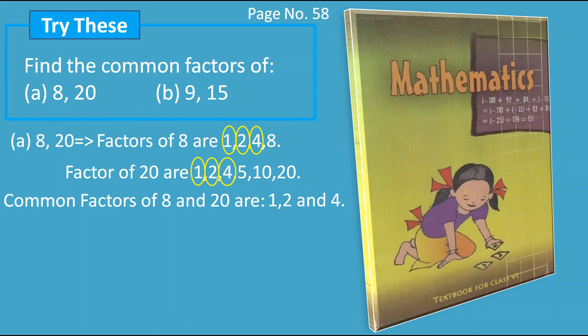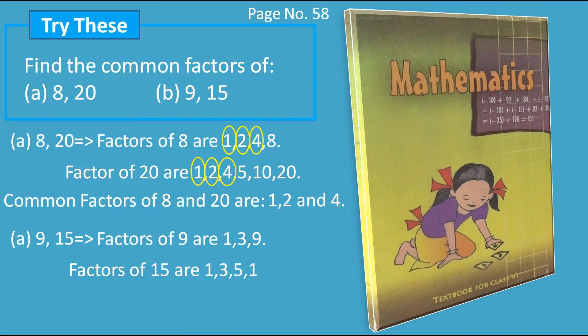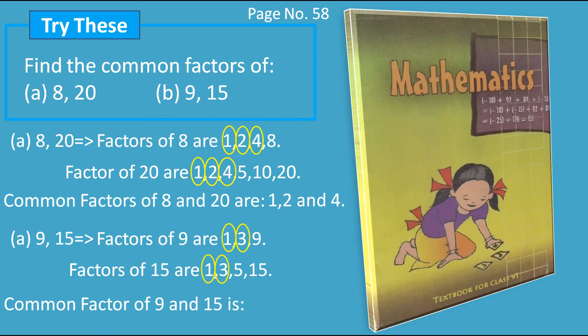Now let's find the common factors of 9 and 15. The factors of 9 are 1, 3, 9 and the factors of 15 are 1, 3, 5, 15. Here we are getting 1 and 3 as common factors. So the common factors of 9 and 15 are 1 and 3.